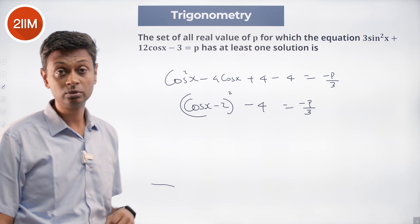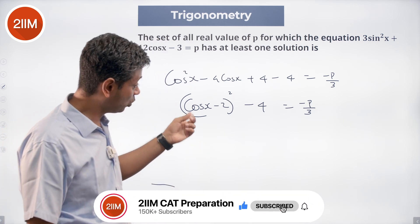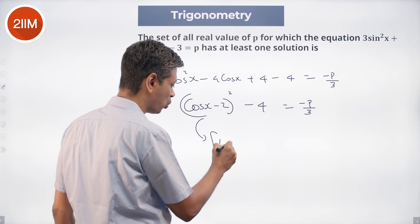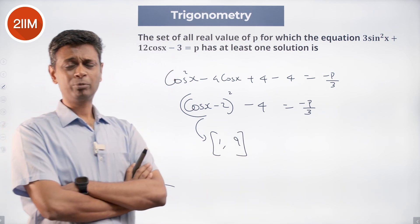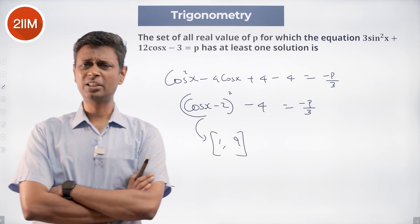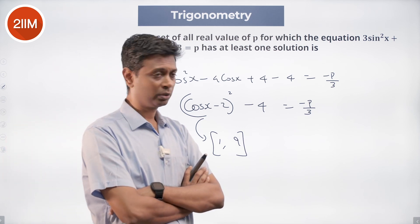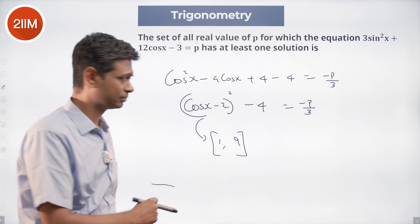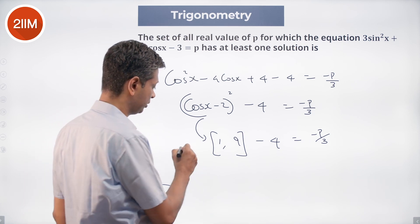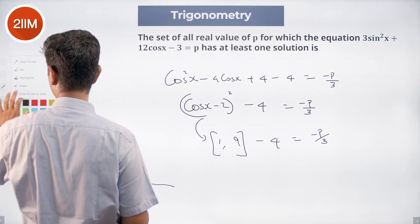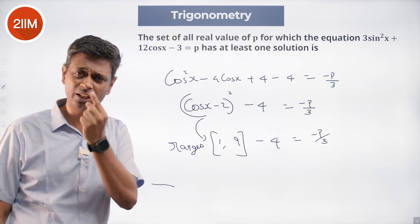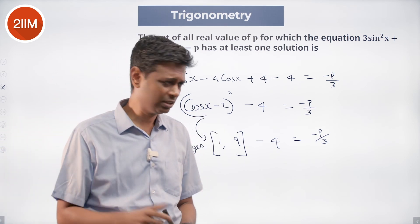Now, cosx ranges from -1 to +1. When cosx = -1: (-1 - 2)² = (-3)² = 9. When cosx = +1: (1 - 2)² = (-1)² = 1. So (cosx - 2)² ranges from 1 to 9, and it takes all values in between.